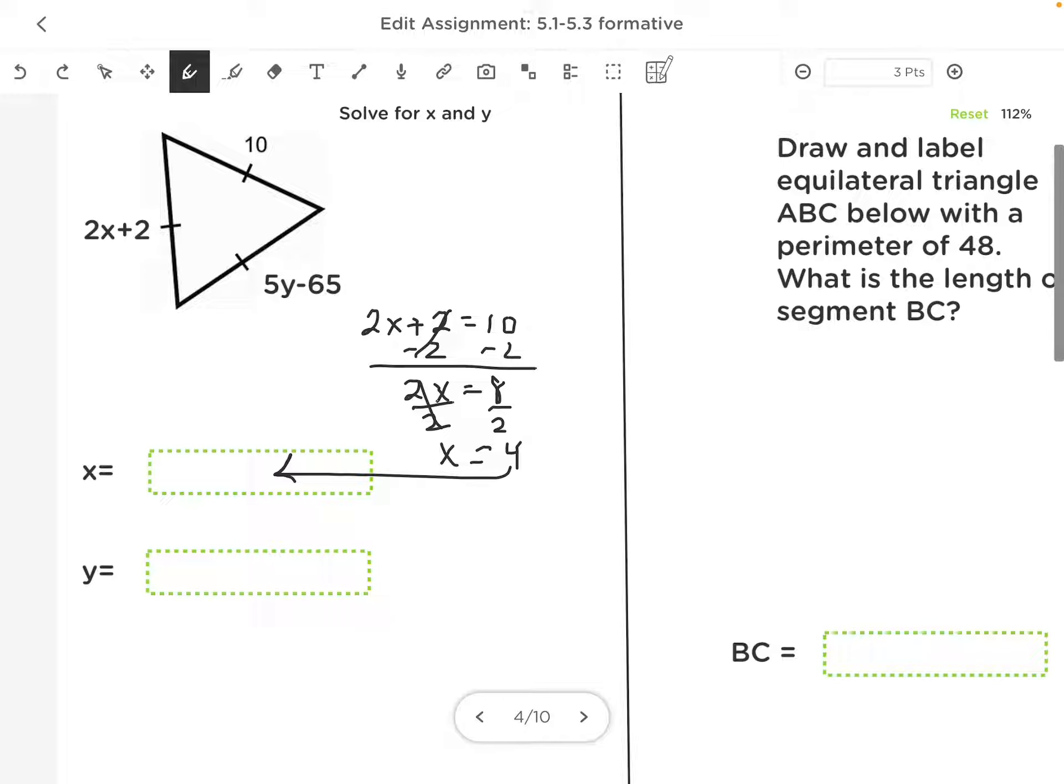To solve for y, I also know that 5y minus 65 should equal 10. So my second equation, I have 5y minus 65 is equal to 10.